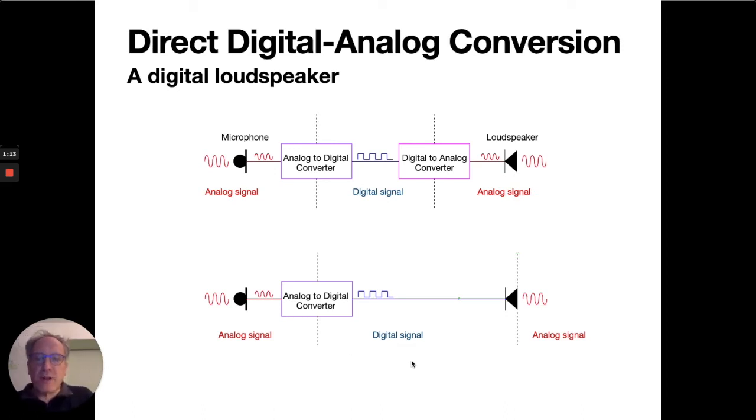The aim of a digital loudspeaker is to remove the digital-to-analog converter in the sound reproduction chain. We need a particular type of loudspeaker that understands digital signals and converts them directly into sound. This type of loudspeaker is what we call a digital loudspeaker.